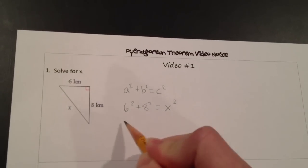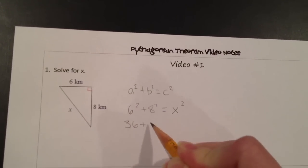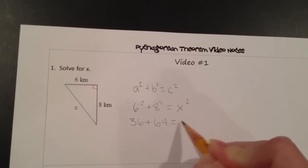To solve this, 6 squared is 36, plus 8 squared, which is 64, equals x squared.